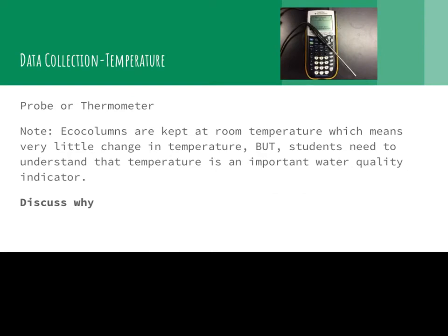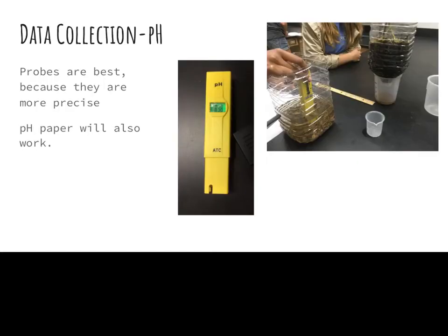For temperature, just use a thermometer — a Vernier probe is the most expensive way to take temperature. Before creating the aquatic chamber, discuss the importance of temperature in your instructional notes: the colder the water, the more dissolved oxygen it holds, and certain species prefer a certain temperature range. pH is important as well — it will go up and down slightly depending on what kinds of cellular respiration and photosynthesis are going on. Probes are the best for pH; you can use pH paper but you won't notice the slight changes without a probe.